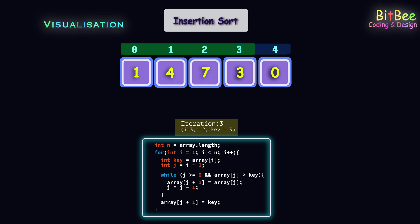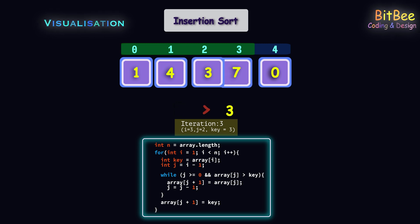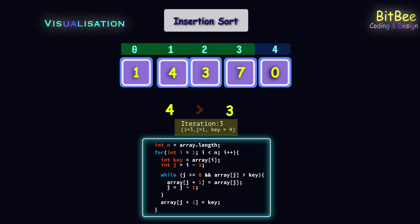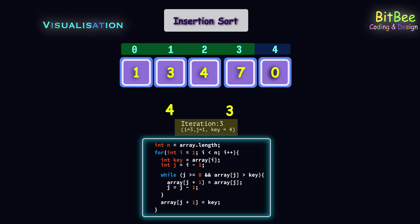Now i and key point to the 3rd index and j points to the 2nd index. Since 7 is greater than 3, these two elements will get swapped. Again, 4 is greater than 3, and 4 and 3 will be swapped. Now 3 outer iterations were completed and we reached the last outer iteration.